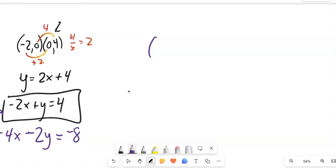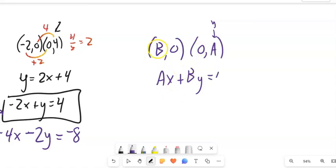But in general, if I have, let's say, B0 and 0A, sorry, and those are zeros, not O's. This is a y value, so I could go A times my x plus B times my y equals A times B.